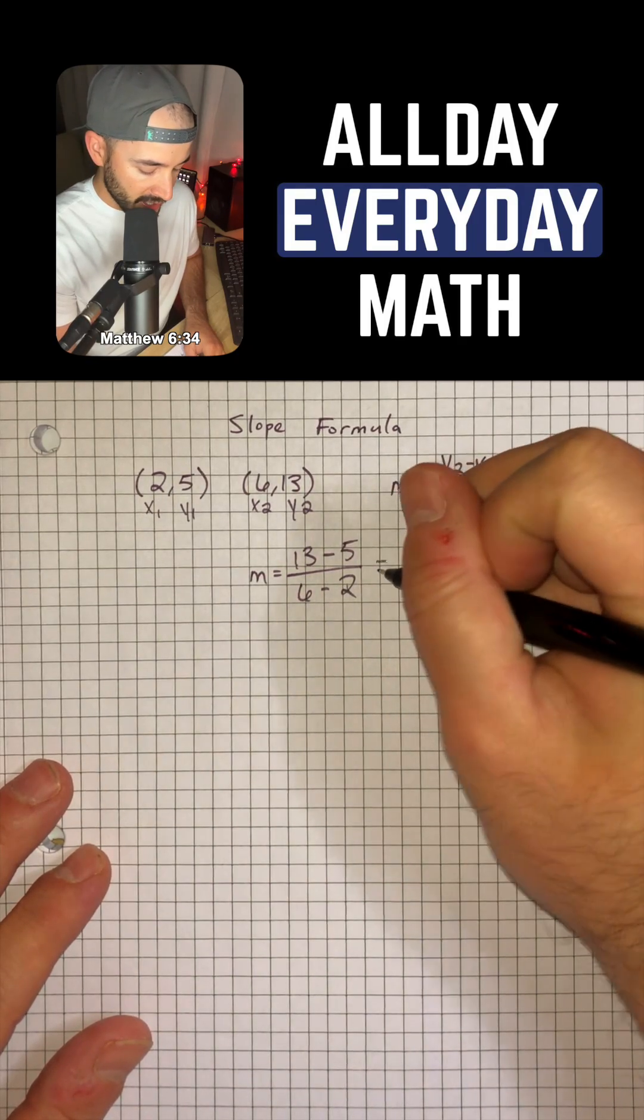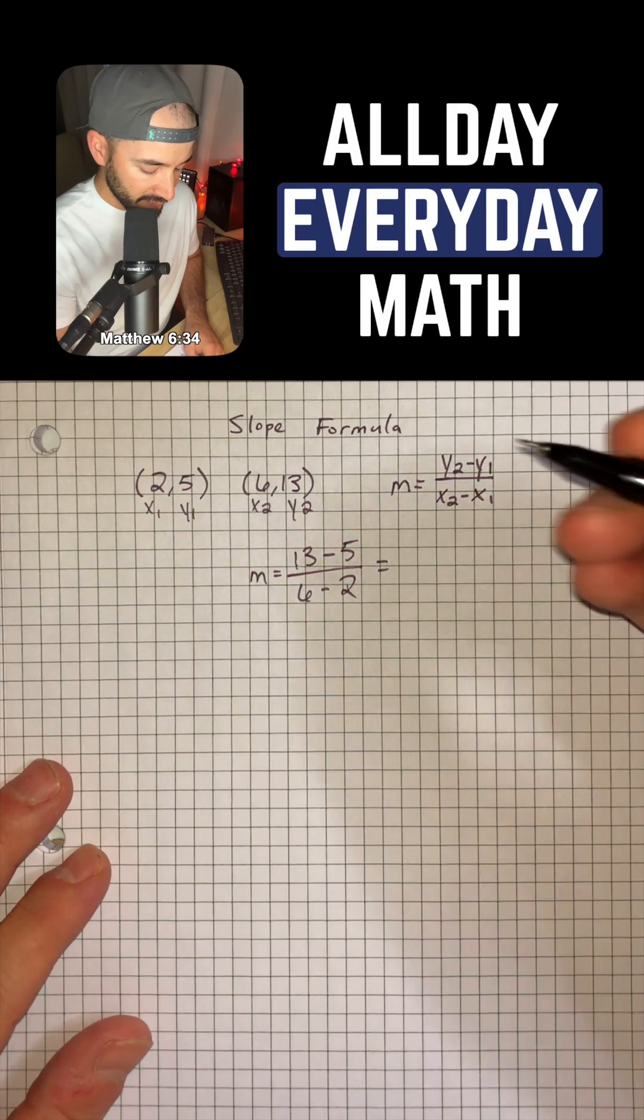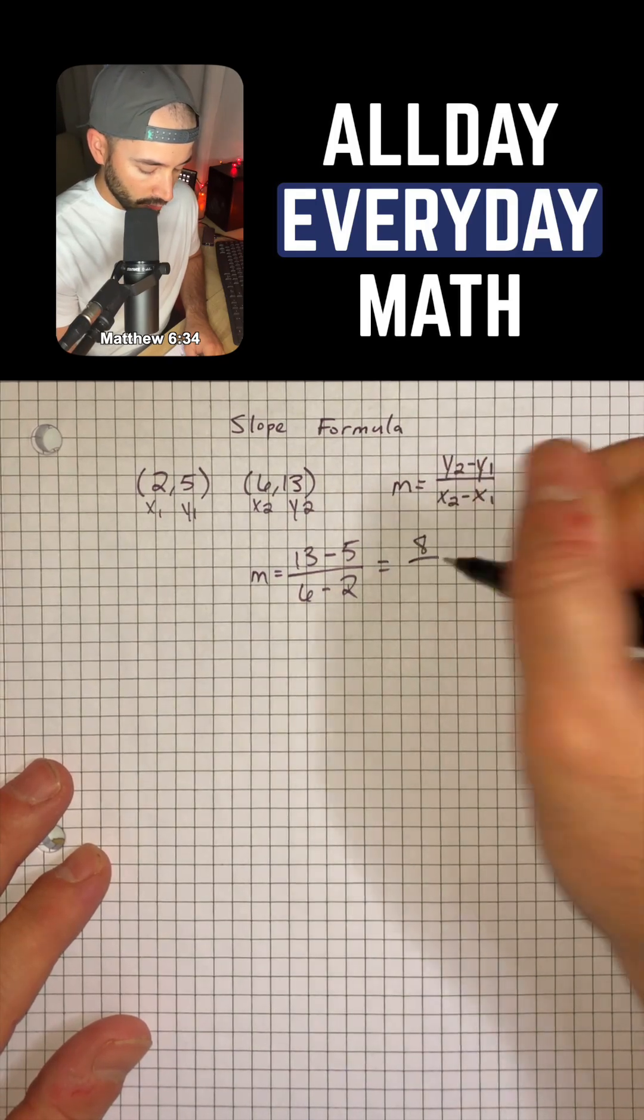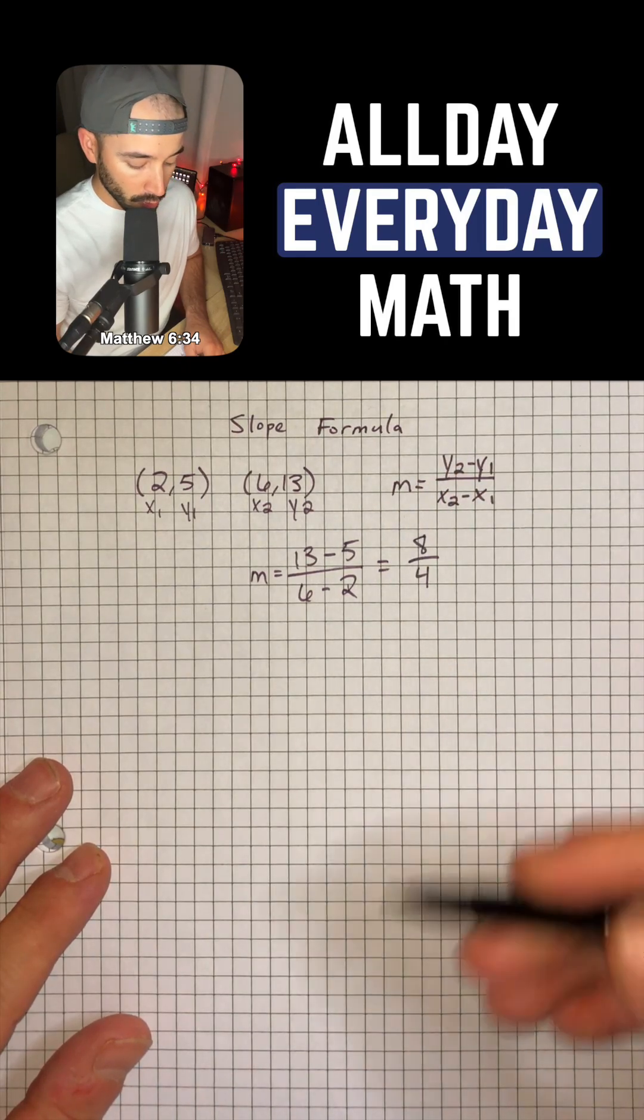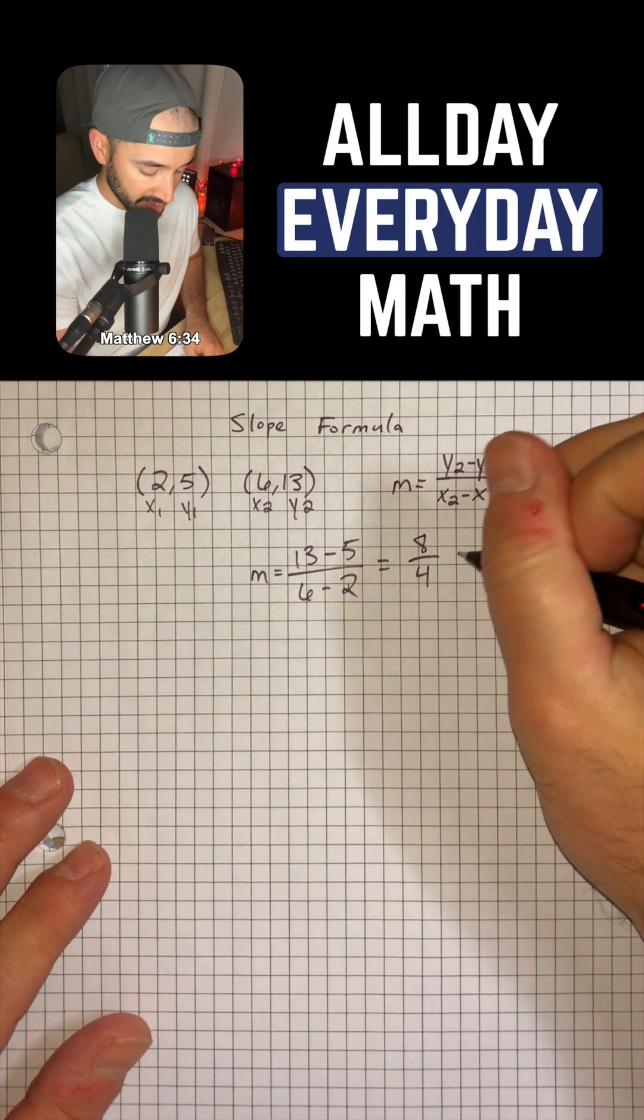And so now we can just do the math. So 13 minus 5 is going to be 8 over 6 minus 2 is 4. And so 8 over 4, or 8 divided by 4, is going to be 2.